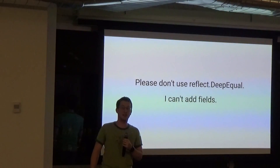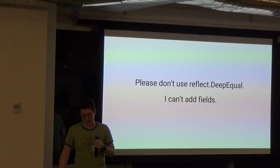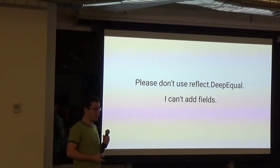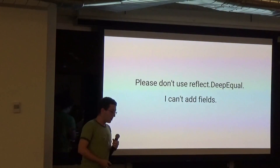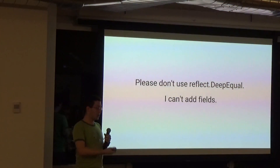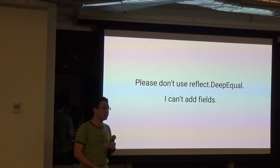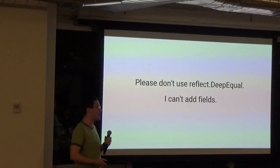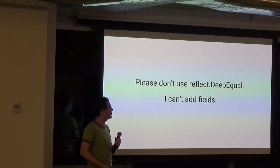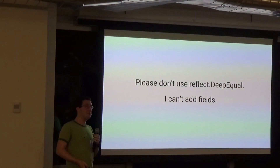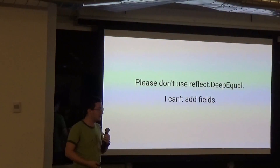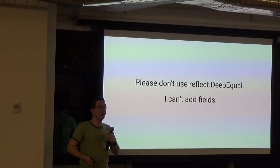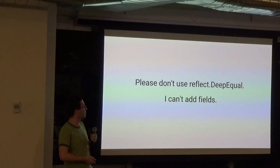Lesson one: please don't use reflect.DeepEqual. It saves you code, but when I'm making a simple change to a library — like adding a field — that shouldn't break your application. Maybe you do actually depend on a person only having a first name and last name field, but I need to be able to add fields over time as a compatibility contract. Over-constraining your test doesn't allow me to maintain and fix library bugs.